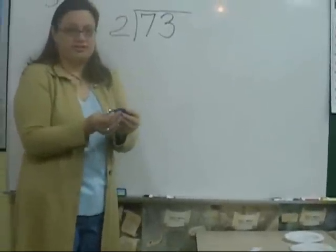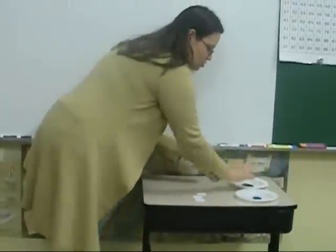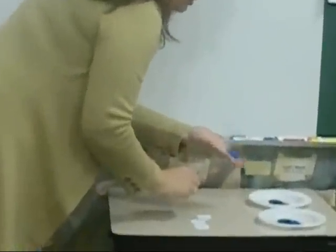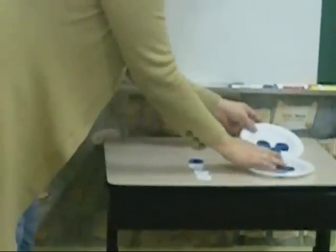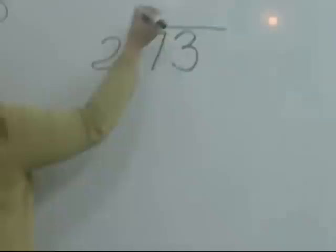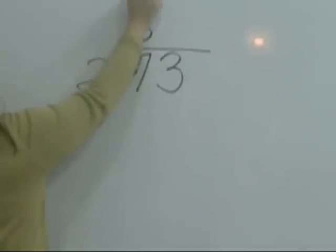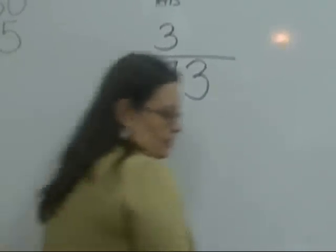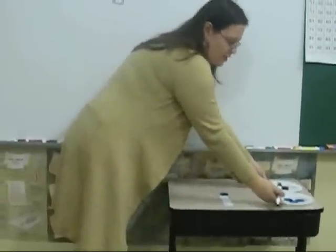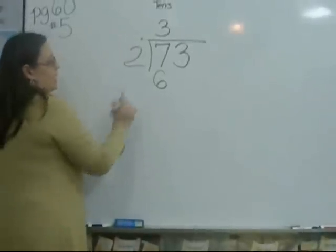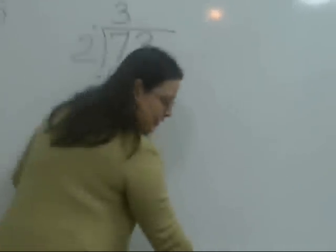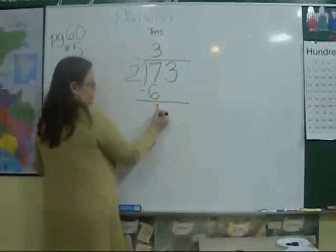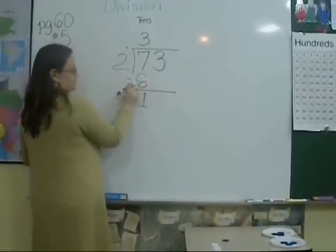Let's share 7 tenths — 1 for each, 2, 3. How many do each of my friends get? 3. So I put 3 in the tens because they got 3 tens. 3 times 2 equals 6. I used 6 tens — I gave away 6 tens. How many tens do I have left inside my house? I have 1 ten left. 7 minus 6 equals 1.